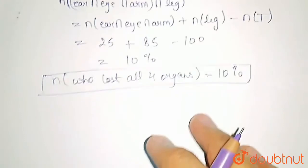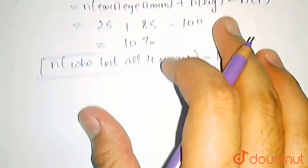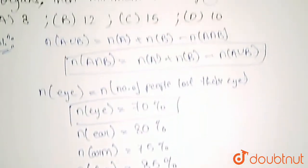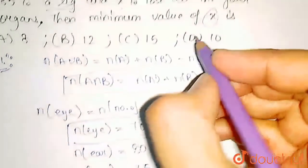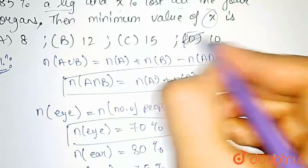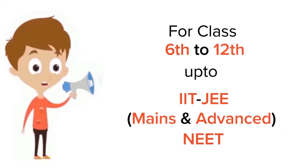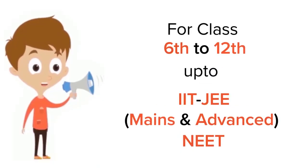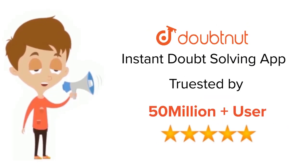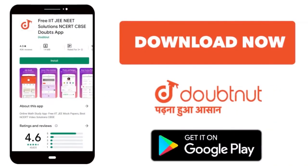The correct option is option D. For class 6 to 12, IIT JEE and NEET level, trusted by more than 5 crore students. Download the DoubtNut app today.